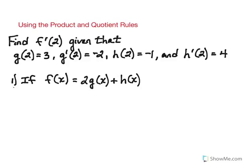Let's look at a few different types of problems involving both the product and quotient rules. In this first problem, we're asked to find f prime of 2 given different combinations of f of x. The four conditions given are: g of 2 equals 3, g prime of 2 equals negative 2, h of 2 equals negative 1, and h prime of 2 equals 4.